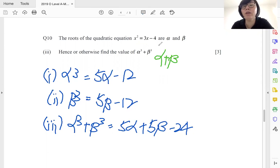Because we want to know what is the value of alpha plus beta, so what do we do? Let me just do a little side working over here for you to see. Let me rearrange my quadratic equation: x squared minus 3x plus 4 is equals to zero.